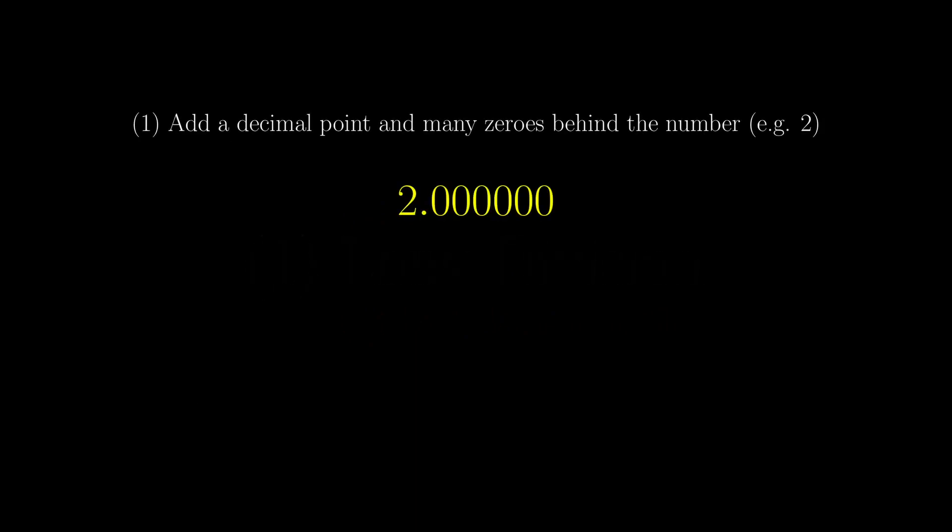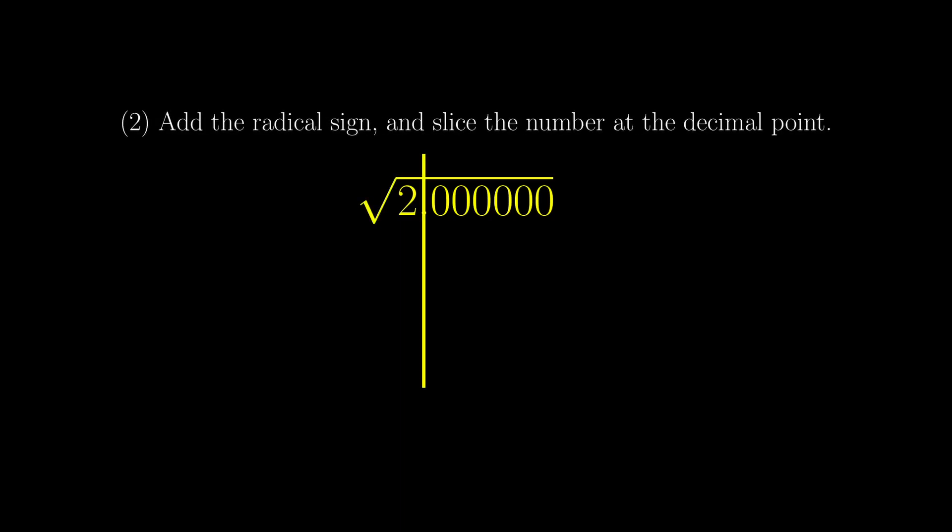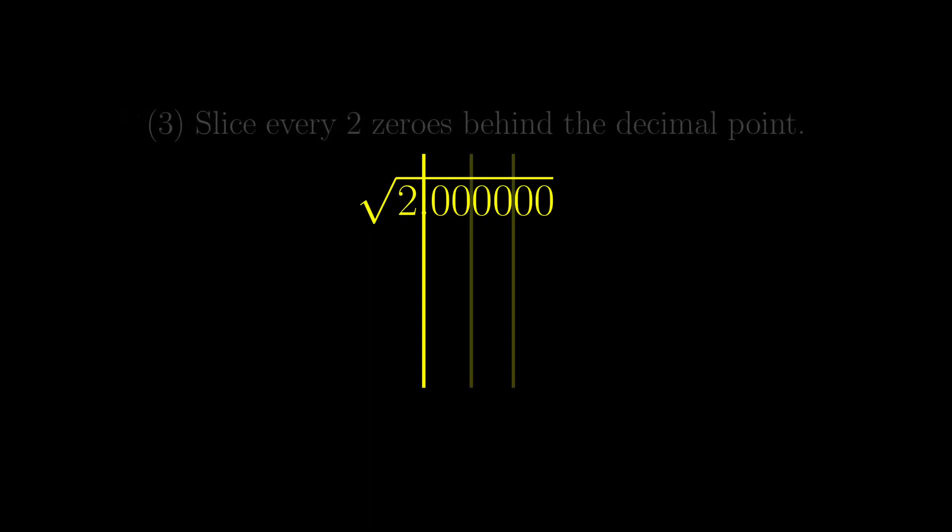First, add a decimal point and many zeros behind the number. Then add the square root sign and slice the number at the decimal point. Slice every two zeros behind the decimal point.